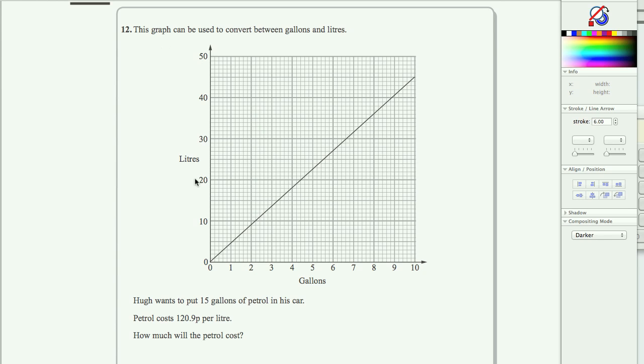So this is a question relating numbers of litres to numbers of gallons. And the thing to remember is that a graph has got a series of points on it that make up this line, any one of which is an exchange rate. So I'm going to choose the easiest one, which is this point here.